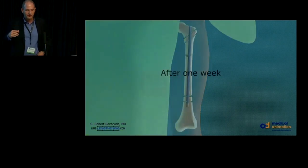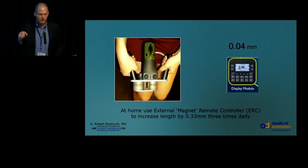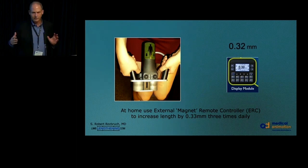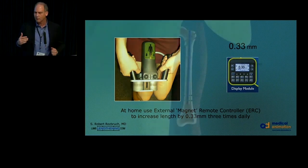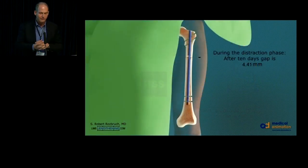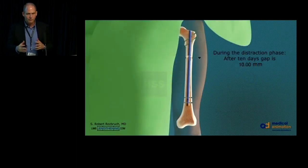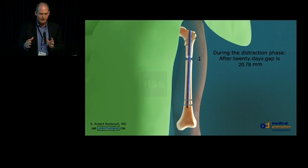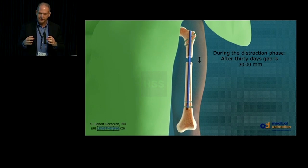Then you lock it proximal and distal, and you're done. You identify where the magnet is, make a little mark on the skin, and then start the lengthening process after an appropriate amount of time. You wait a certain latency phase, then you distract at whatever rate you want — usually a quarter millimeter four times a day. The distraction happens gradually; that's distraction osteogenesis, and the callus will gradually mineralize and consolidate.